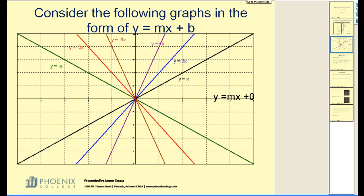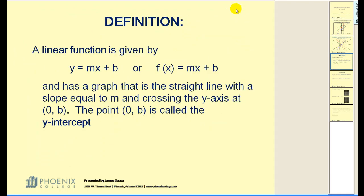Let's put all those pieces together. A linear function is given by y equals mx plus b, or f of x equals mx plus b, has a graph as a straight line with a slope equal to m and crossing the y-axis at zero comma b. The point zero b is called the y-intercept.